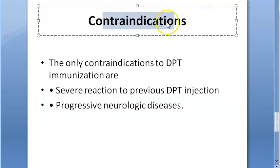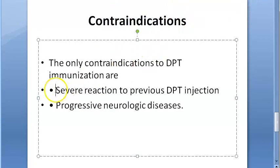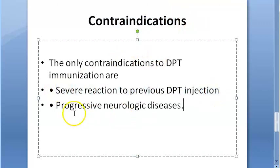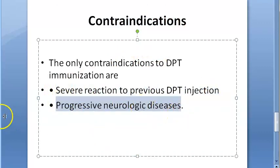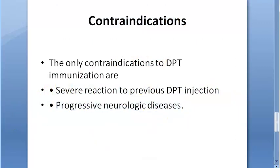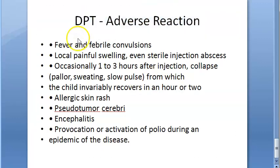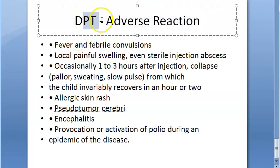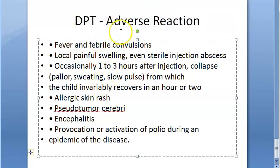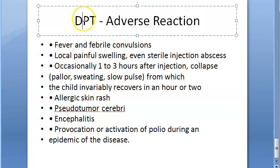Contraindications: this vaccine should not be given if they have had a severe reaction earlier, or if they have progressive neurologic disease. Now, adverse reactions of the diphtheria, pertussis, tetanus vaccine: